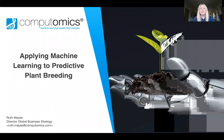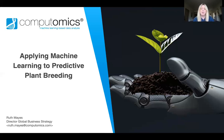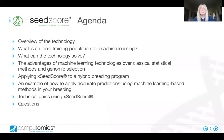Hello, I'm Ruth Mays, the Director of Global Business Strategy at Computomics. The presentation today will showcase the advantages of machine learning for predictive plant breeding. We will also explain the difference between machine learning technology and statistical methods. The Computomics team consists of bioinformaticians and machine learning experts who have spent many years developing and applying machine learning to breeding to develop our Exceed Score technology.